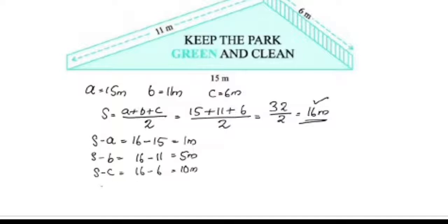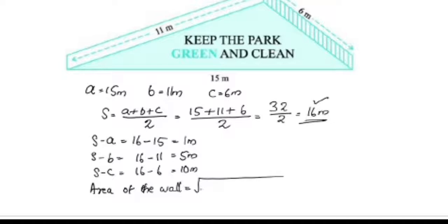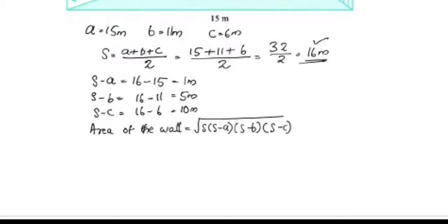Now let's find the area of the wall. The area is equal to the square root of S into (S-A) into (S-B) into (S-C). Substituting the values: S is equal to 16, S-A is 1, S-B is 5, S-C is 10.